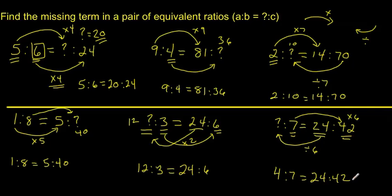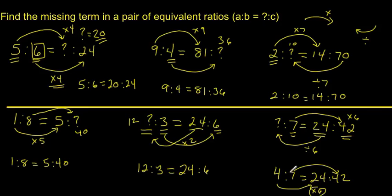Just to explain how you can check your answer: what did I multiply 4 by to get 24? I multiplied it by 6. So now I should multiply 7 by 6 to get 42 — and six sevens are 42, so that's correct. Remember, you're trying to make sure that the relationship between these two numbers is the same for the other two numbers. You've got to maintain that relationship. Whatever you do to one number, you've got to do to the other number. I hope that makes sense to you. Good luck.